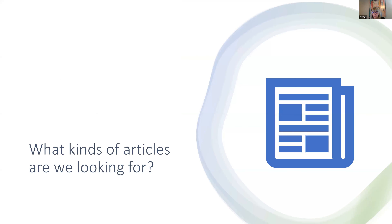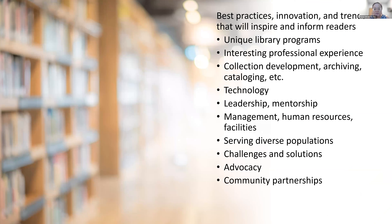At the recent officer workshop we had a lot of questions about how to write for the journal and what kinds of articles we're looking for. It's a pretty wide range. In general, the journal shares best practices for librarianship and celebrates the Texas library community — best practices, innovation, and trends that will inspire and inform readers.